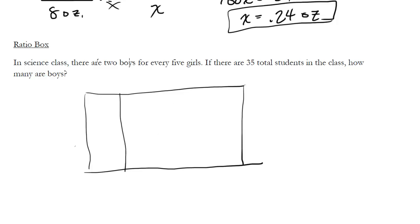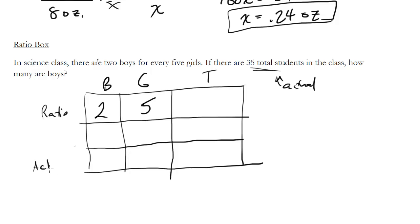There are two boys for every five girls. In this top row, we're going to put the ratio, so it's 2:5. If there are 35 total students, this is the actual number that are present. That goes in the last row and we put that total in this box down here. The first thing we do is find the total within the ratio. We add these two numbers together, we get seven. For every seven students, two are boys, five are girls. Then what multiplier gets us from seven to 35? Seven times five is 35. That multiplier has to be the same for everything because it's a common multiple. We multiply down, we get 10 boys and 25 girls.